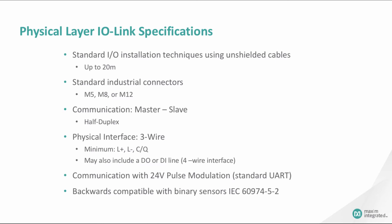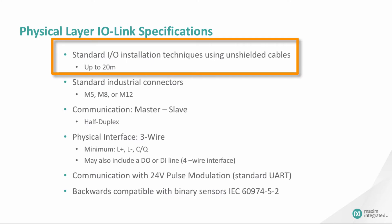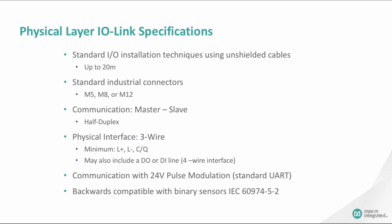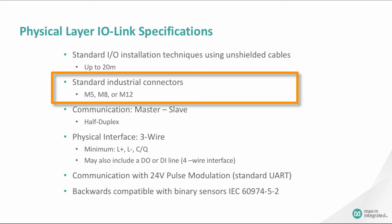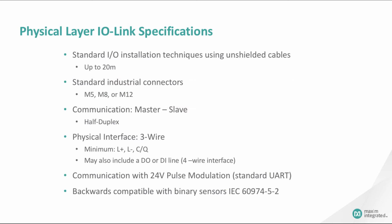The IO-Link standard states that IO-Link communications are limited to a distance of 20 meters using unshielded cables. IO-Link connectors are already in wide use in industrial systems. M5, M8, and M12 connectors are allowed, with M8 and M12 most predominant.